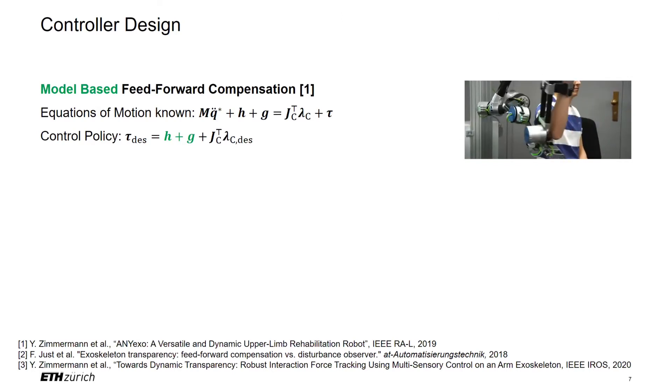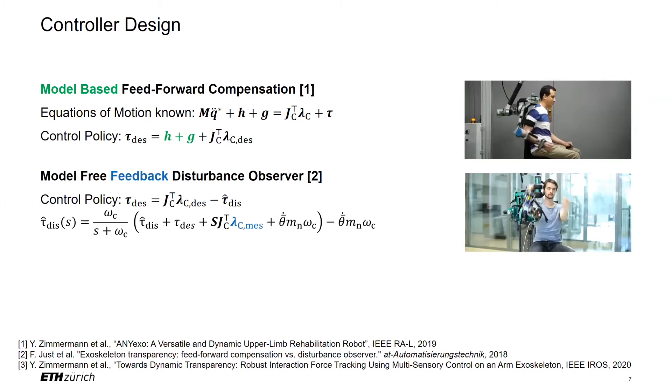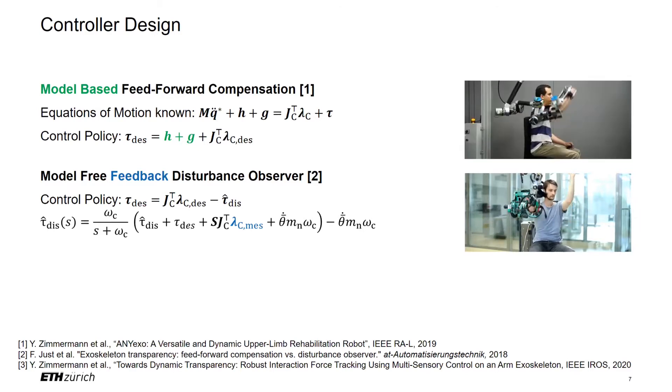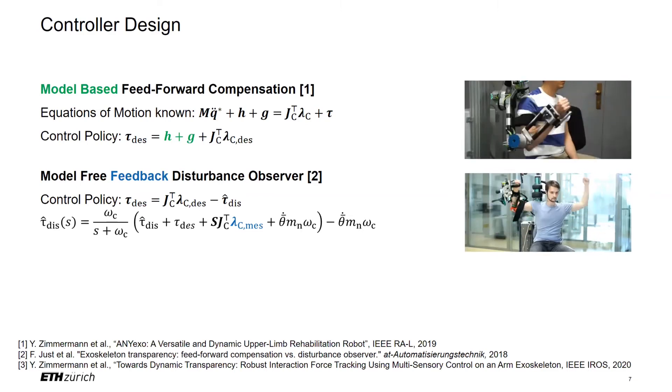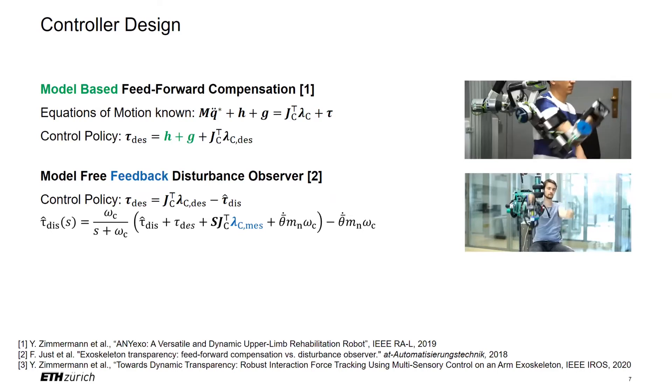To compensate for the inertial terms and the friction, we need to incorporate interaction force measurements. Previous research by Yousstat et al. has shown that a good performance can be achieved by observing the joint torque error and compensating for it. However, this controller does not include any knowledge about the dynamic model of the robot, leaving the disturbance observer to compensate for everything, which leads to a limitation of the torque tracking bandwidth.